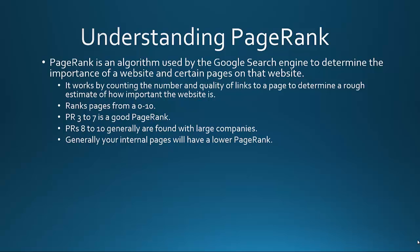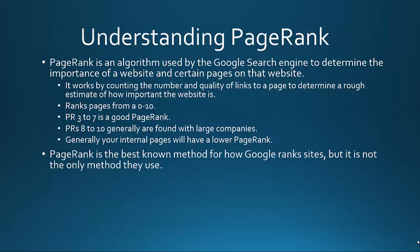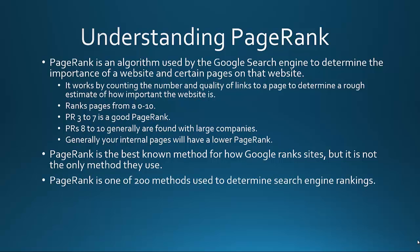Your homepage is oftentimes going to have the highest PageRank, but if your internal pages have a PageRank of 1, 2, or 3, that's still pretty good. PageRank is the best-known method for Google to rank sites, but it is not the only method they use — it's just well-known.